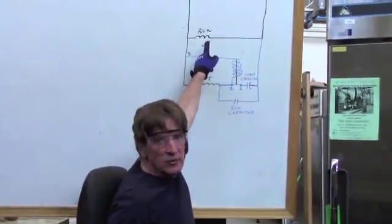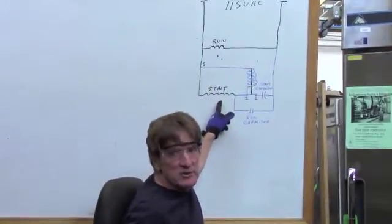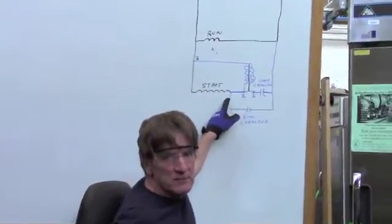A run winding has fewer windings in it. The resistance is lower. The start winding has higher resistance, more windings, maybe smaller wire.